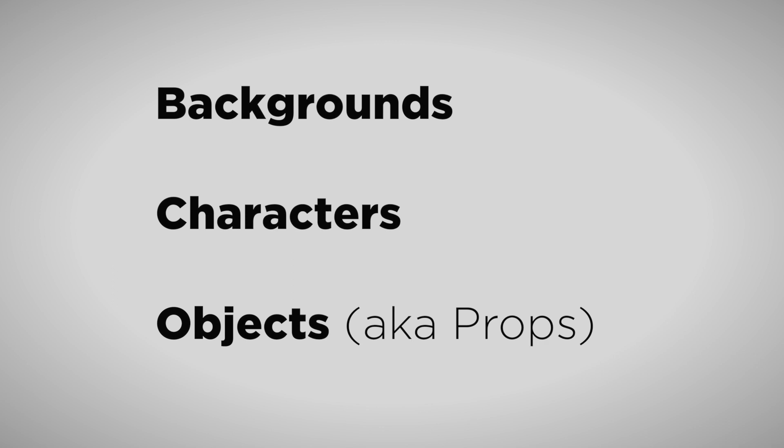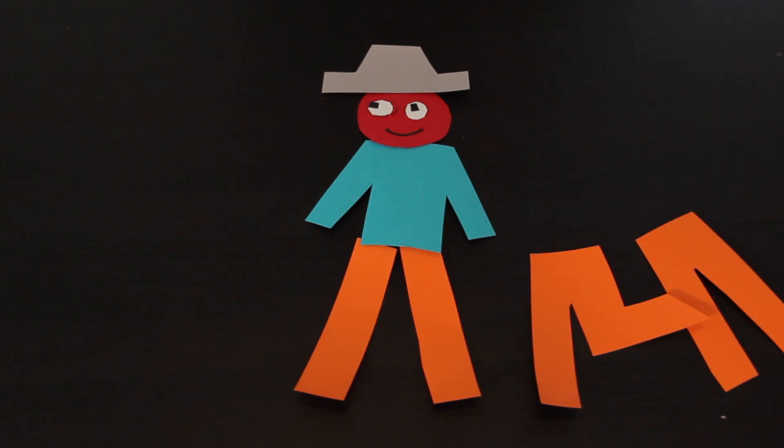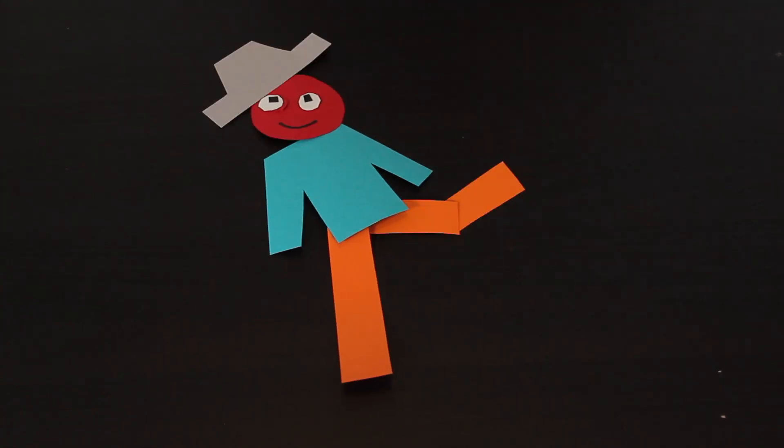Most videos will have assets like backgrounds, characters, and objects. Ask yourself, what needs to be able to move? Will any knees need to bend? If so, you need the leg in two parts.